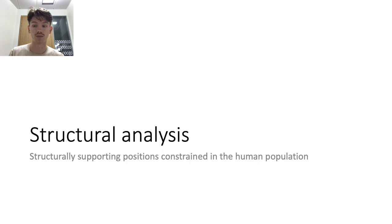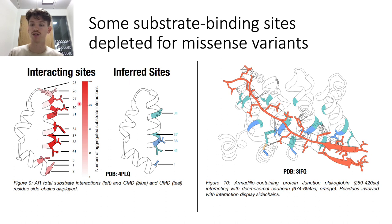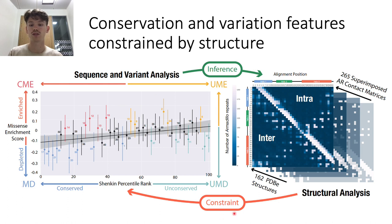Now that we have supported positions important for the armadillo domain fold, let's look at where they interact with their substrates. On the far left, colored with a red gradient, we see where the bulk of protein substrate interactions are located on the armadillo repeat. To the right, we see the positions inferred from our sequence and variant analysis. In blue, conserved and missense depleted sites may be important for binding affinity, whereas unconserved and missense depleted sites in green may be binding specificity sites involved with protein substrate recognition. On the right, we see an example of an armadillo domain interacting with a protein substrate in orange, showing how a single substrate interacts with residues on the concave surface, where we colored the classified sites depleted for missense variants. This novel cross-disciplinary approach demonstrates how conservation and variation features are constrained by structure, and thus these features can be used to infer structural features.